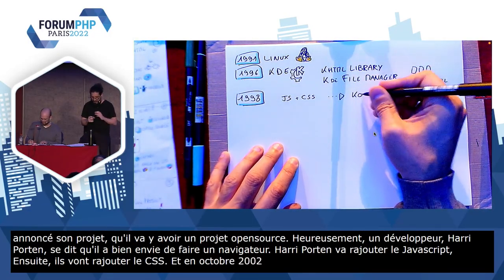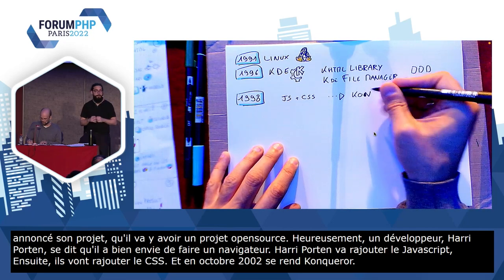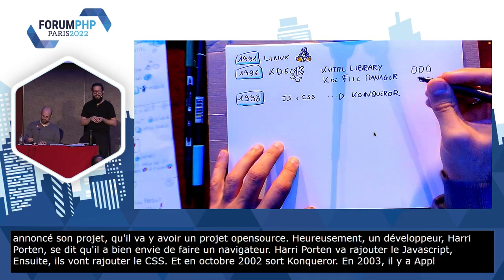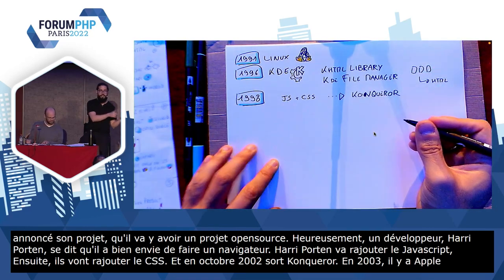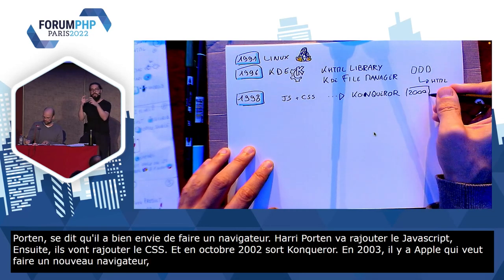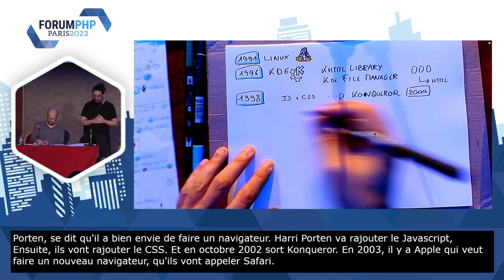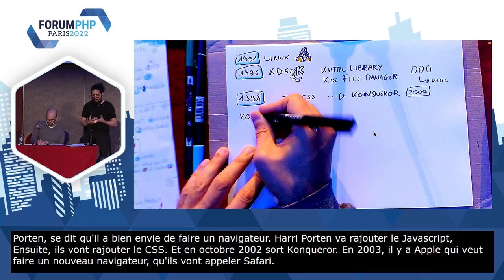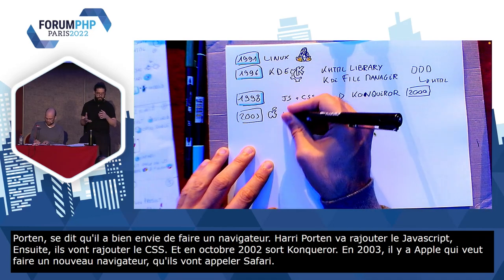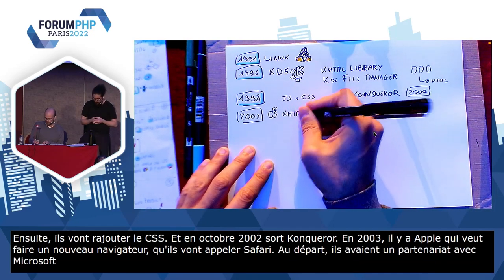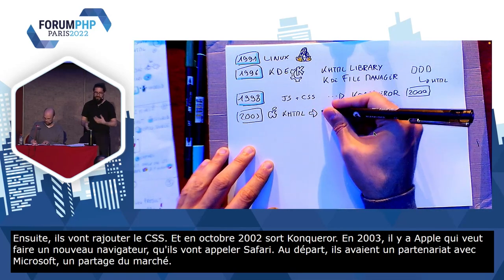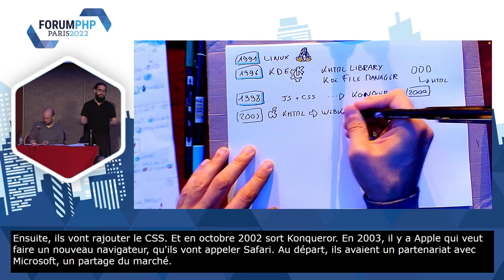Alors pourquoi j'ai fait cette parenthèse ? Parce qu'en 2003, il y a Apple qui se dit que ce serait bien qu'ils fassent aussi un nouveau navigateur qu'ils vont appeler Safari. Et pour ça, ils vont prendre KHTML, donc la base de Konqueror, ils vont le forker et ils vont appeler ça WebKit. Et pourquoi ils ont besoin de faire ça ? Parce qu'au départ, ils avaient un partenariat avec Microsoft — un partage de marché — un partenariat en 1998 pour 5 ans que Internet Explorer serait le seul navigateur sur Mac.